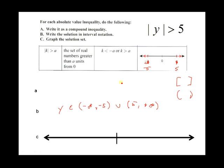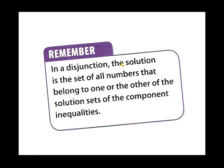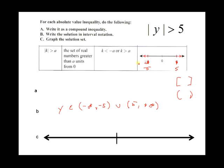In a disjunction, the solution is the set of all numbers that belong to one or the other of the solution sets of the component inequalities. The red arrows going left of negative 5 and right of 5 on the number line represent all the solutions — every possible value we can substitute for y that will make the absolute value inequality true. That's what we're trying to find.